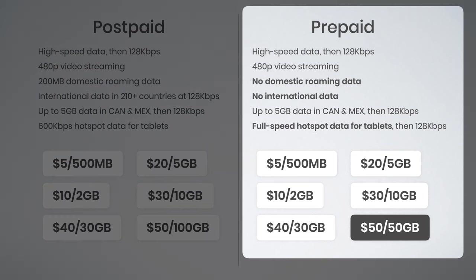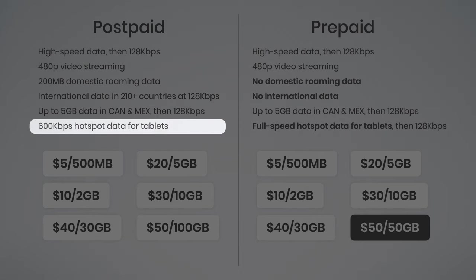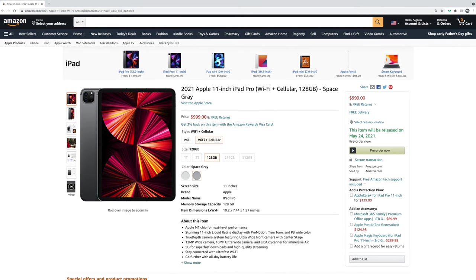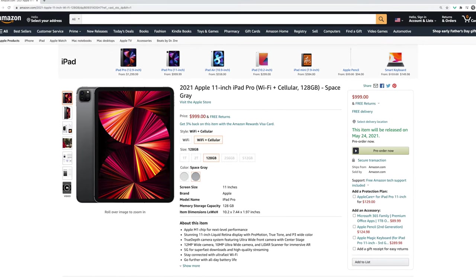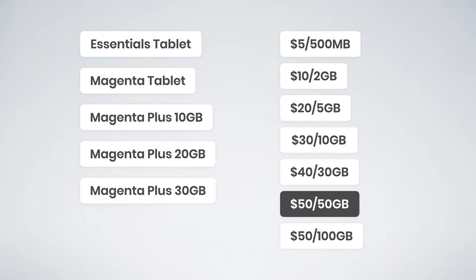Prepaid can be a great option, particularly for tablet users, because you can share your data as full-speed hotspot data as opposed to that 600 kilobit per second limit on the postpaid plans. And just to reiterate, these plans are available for both tablets and dedicated hotspot devices like the Nighthawk or others. So those are T-Mobile's tablet and data plans, as well as which plans I recommend.